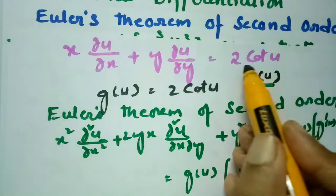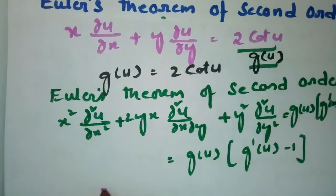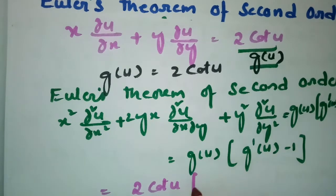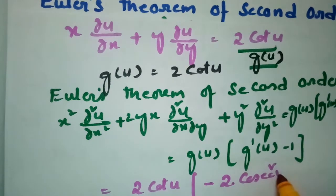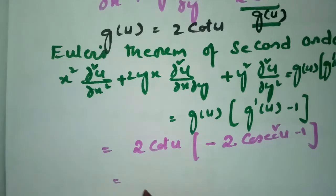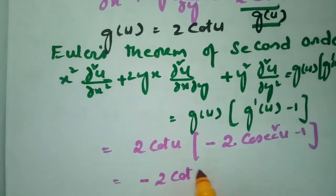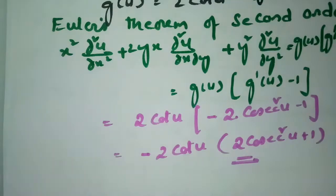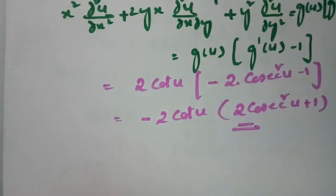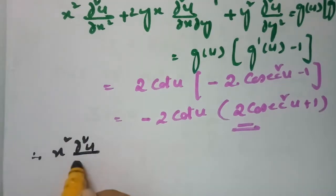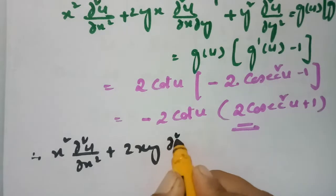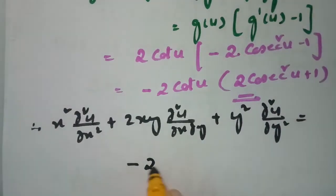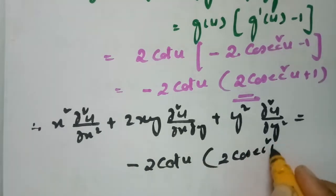Substituting g(u) = 2 cot u, the derivative g'(u) is the derivative of 2 cot u with respect to u, which is minus 2 cosecant squared u. So g(u) into g'(u) minus 1 gives 2 cot u into (minus 2 cosecant squared u minus 1). Bringing the minus outside, this is minus 2 cot u into (2 cosecant squared u plus 1).